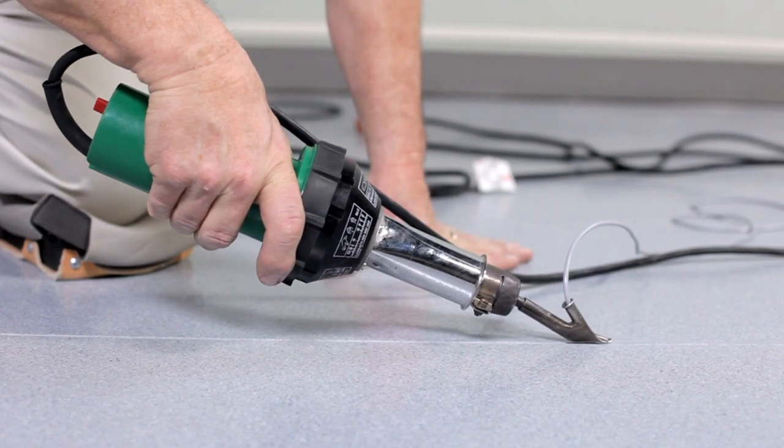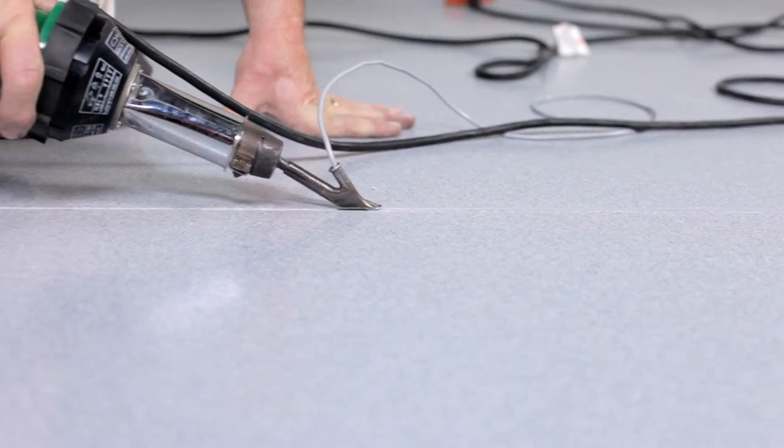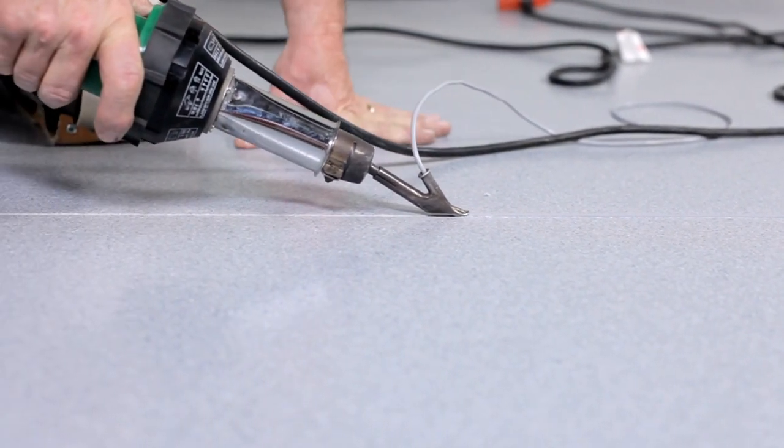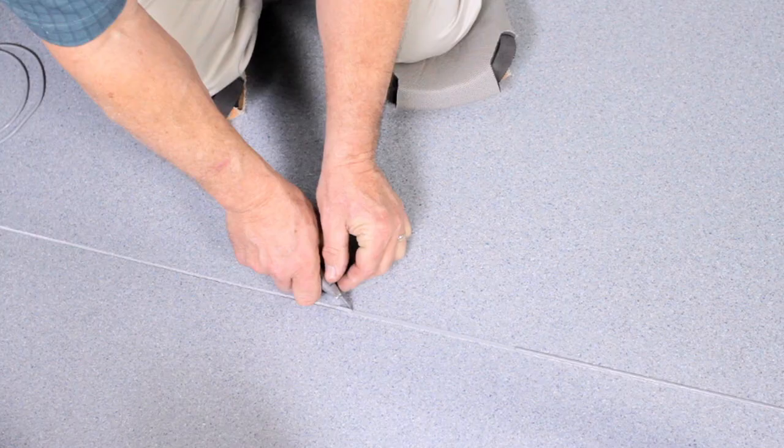Heat welding is a function of temperature and speed. The rod should be well bonded to the sheets without scorching the edges of the seam cut. There should be a slight ridge or crinkle at both edges of the rod.